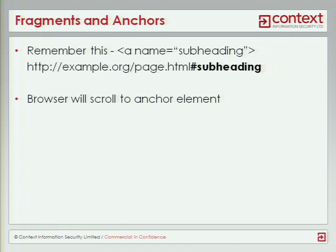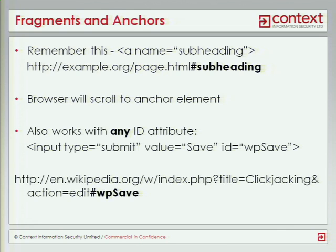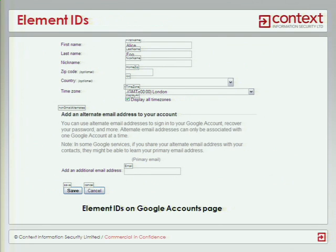I'll just go through this — people familiar with HTML will probably recognize it. In the source of a page, we can have an anchor tag and give it a name. If we then visit a page and have this name at the end of the URL, the browser will scroll down to make that section visible. We can use this same method to position a target in an iframe for a clickjacking attack without knowing exactly where it is on the page. Although lots of web pages don't use name tags, most web pages have elements with ID attributes, and we can also use ID attributes to scroll down to a particular element. This is an example from the Google Accounts page — each of those little boxes is an element that has an ID — so we can use this method to target any of these elements without necessarily knowing where they are on the page.